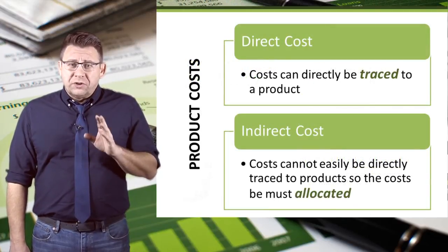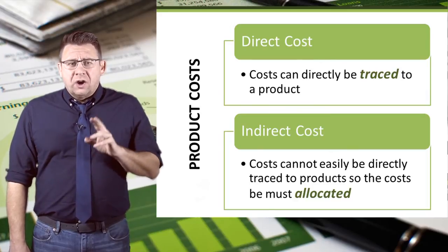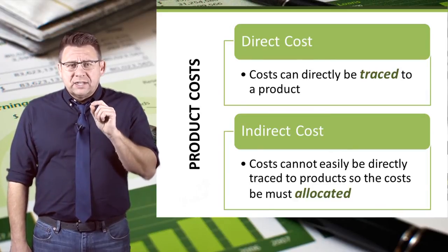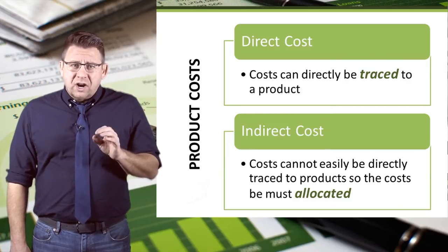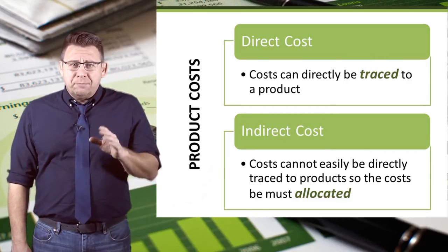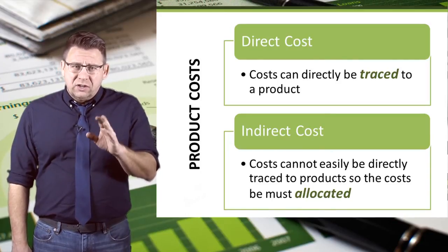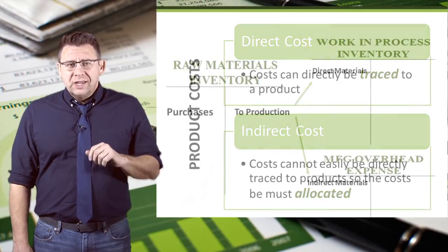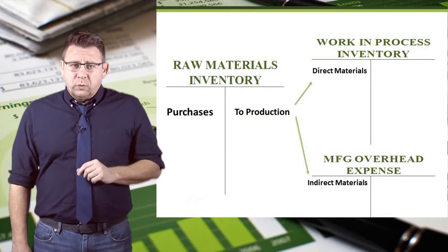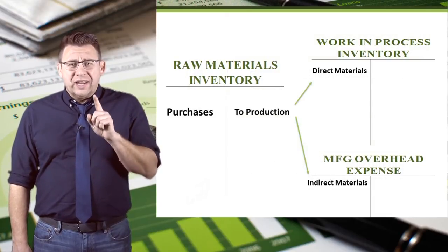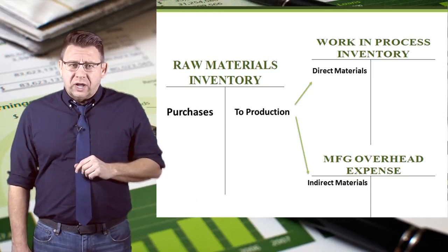Direct costs, like direct materials, are those that can be traced directly to a product. Indirect costs are those that can't be traced to a product, so those costs need to be allocated to the products. Even though the indirect materials physically go to WIP, the costs are indirect and therefore will be allocated to the job.